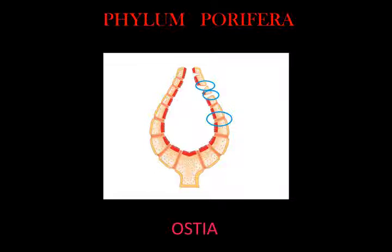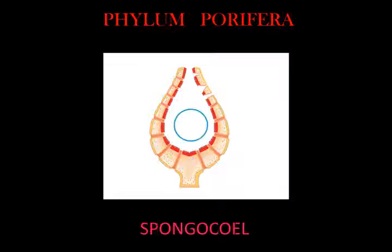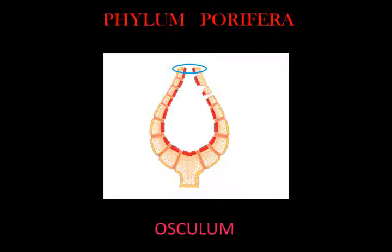The mesohyl is a jelly-like substance made mainly of collagen and reinforced by a dense network of fibers also made of collagen. The spongocoel is the interior cavity of the sponge. The osculum means 'little mouth' — a large opening to the outside through which water exits after passing through the spongocoel.